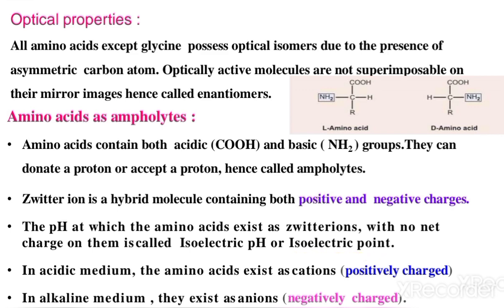In acidic medium, the amino acid exists as a cation — positively charged. In alkaline or basic medium, the amino acids exist as anions — negatively charged.